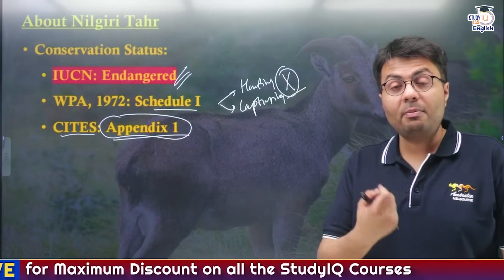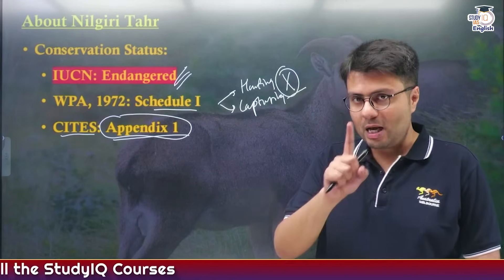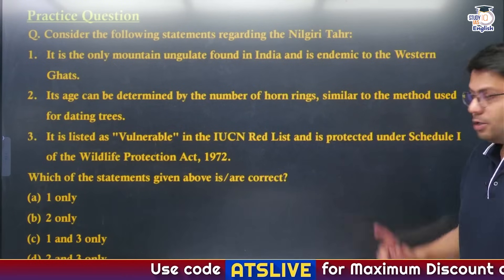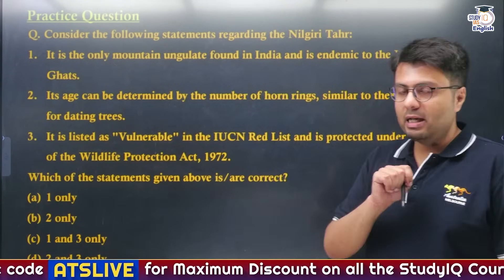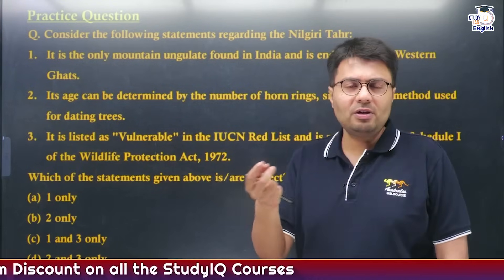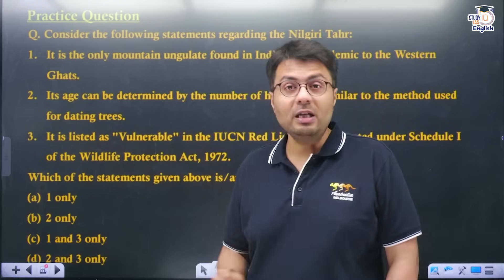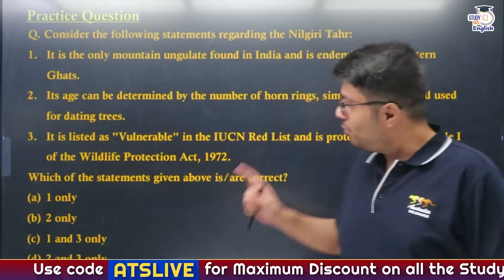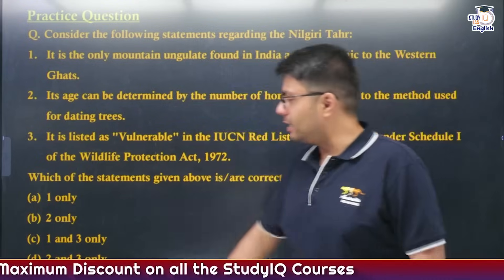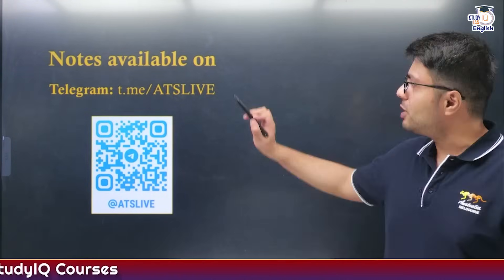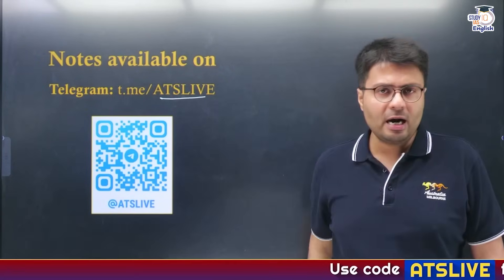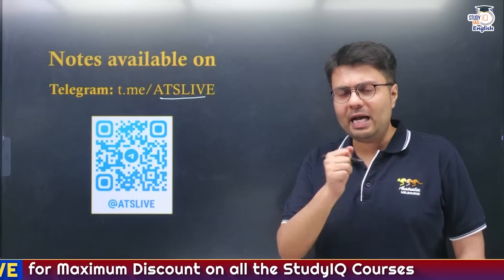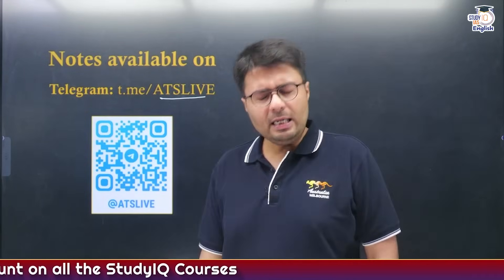In today's discussion, we covered Mukurti National Park in detail and its flagship species, the Nilgiri Tahr. Before concluding, please solve the question on screen and let me know the correct answer in the comments. Also share your thoughts: will the new hydropower project near Mukurti National Park harm the ecology, or is it necessary for Tamil Nadu? Notes are available on my Telegram channel 'ATS Live' — search it or scan the QR code to subscribe. See you tomorrow at 9!